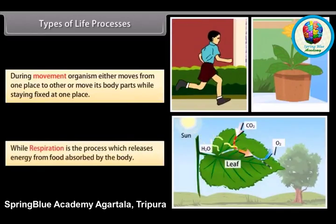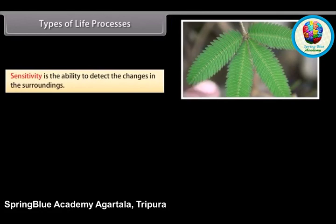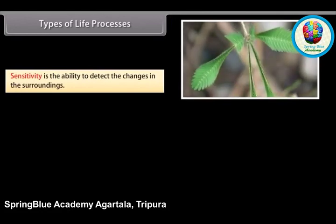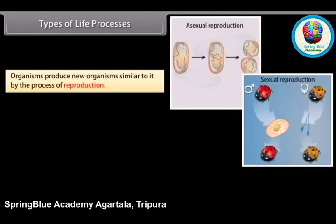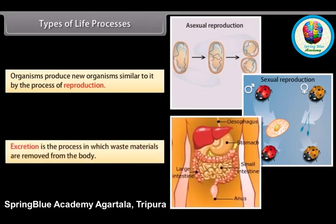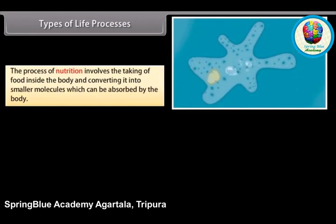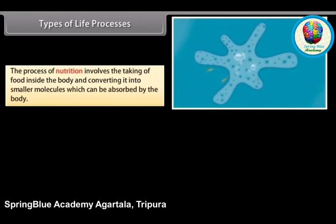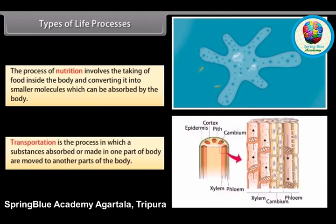Respiration is the process which releases energy from food absorbed by the body. Sensitivity is the ability to detect changes in the surroundings. Growth can be defined as the change from child to adult. Organisms produce new organisms similar to themselves by the process of reproduction. Excretion is the process in which waste materials are removed from the body. The process of nutrition involves taking food inside the body and converting it into smaller molecules which can be absorbed by the body. Transportation is the process in which substances absorbed or made in one part of the body are moved to another part of the body.